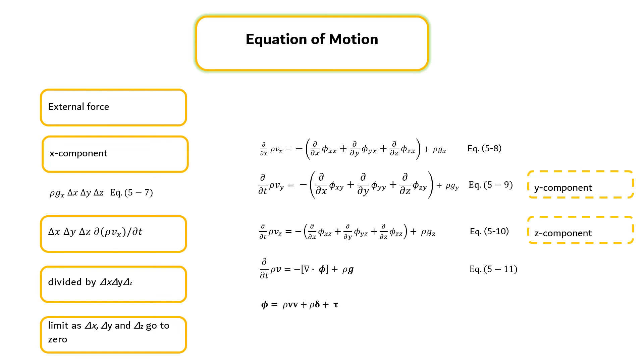Inserting phi equal to rho vv plus rho delta plus tau will result into an Equation of Motion as shown in Equation 5.12.